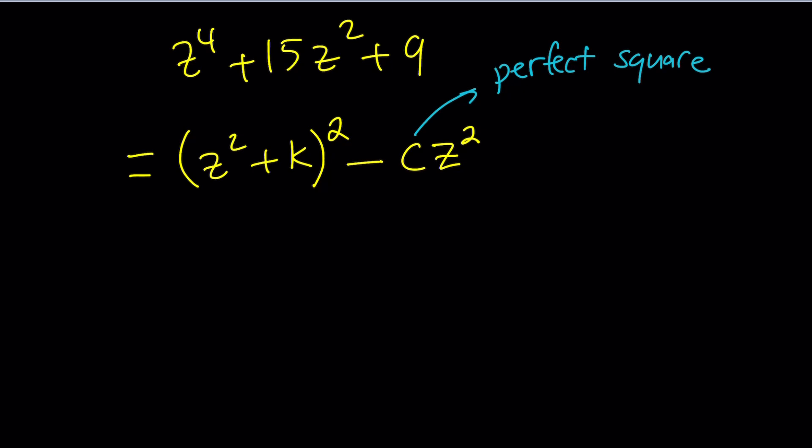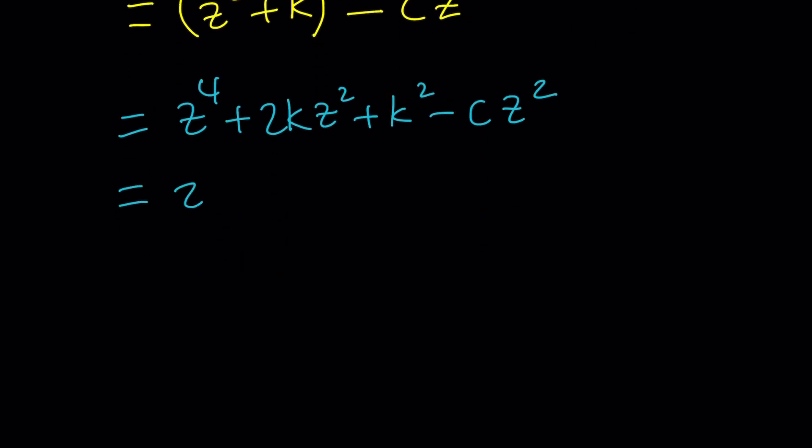Now if you expand it, obviously you're going to get the following. z to the fourth power plus 2k z squared. I should use a b so I could say 2b. But anyways, you get the idea. Plus k squared minus c z squared. And if you collect like terms, z to the fourth plus 2k minus c z squared plus k squared.